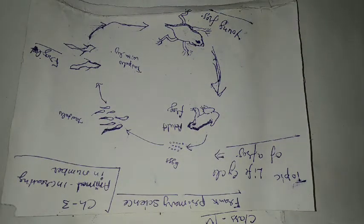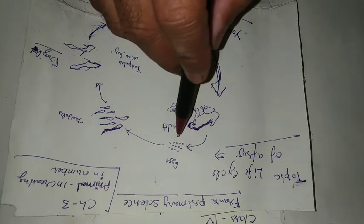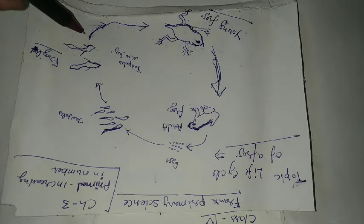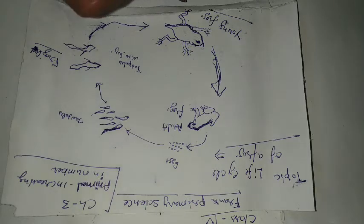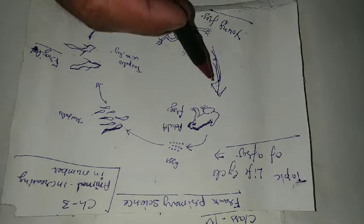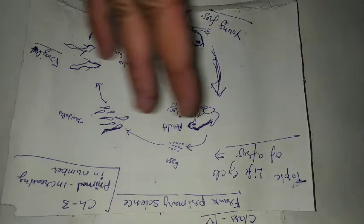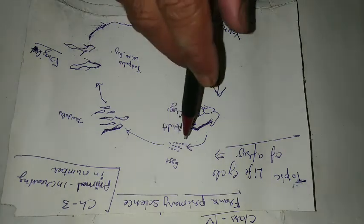Yes, this is the diagram of a life cycle, life cycle of a frog. First is eggs, second is tadpole, tadpole with legs, that's froglet, and young frog, that is adult frog.